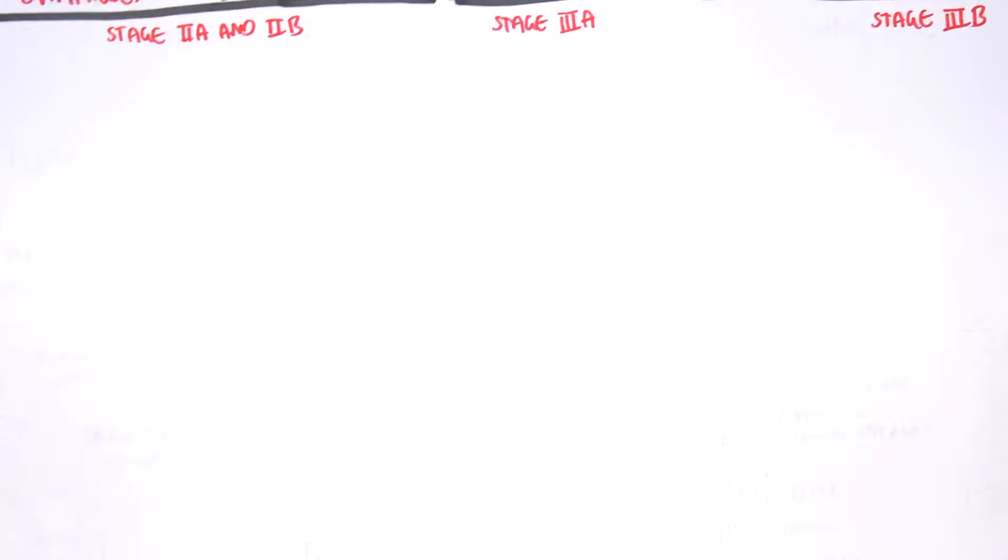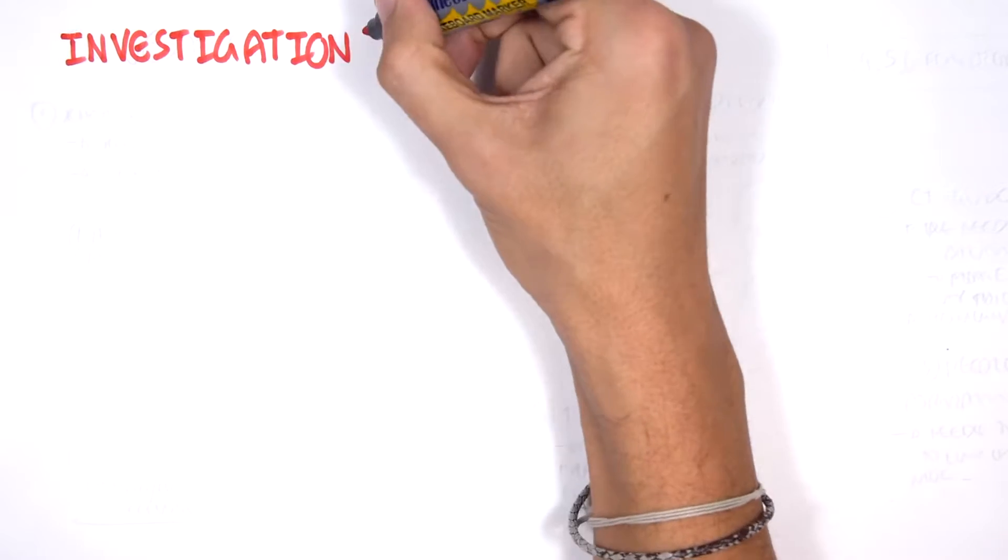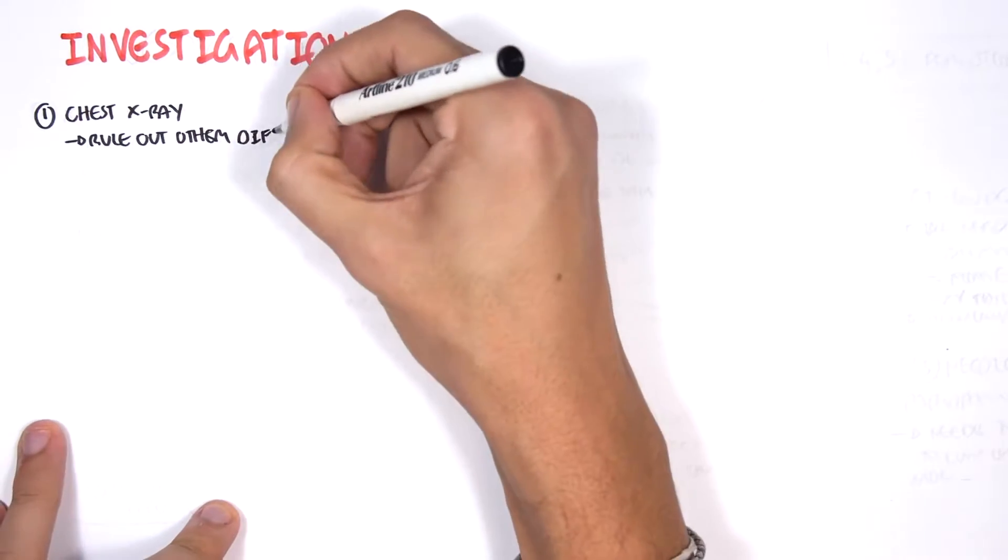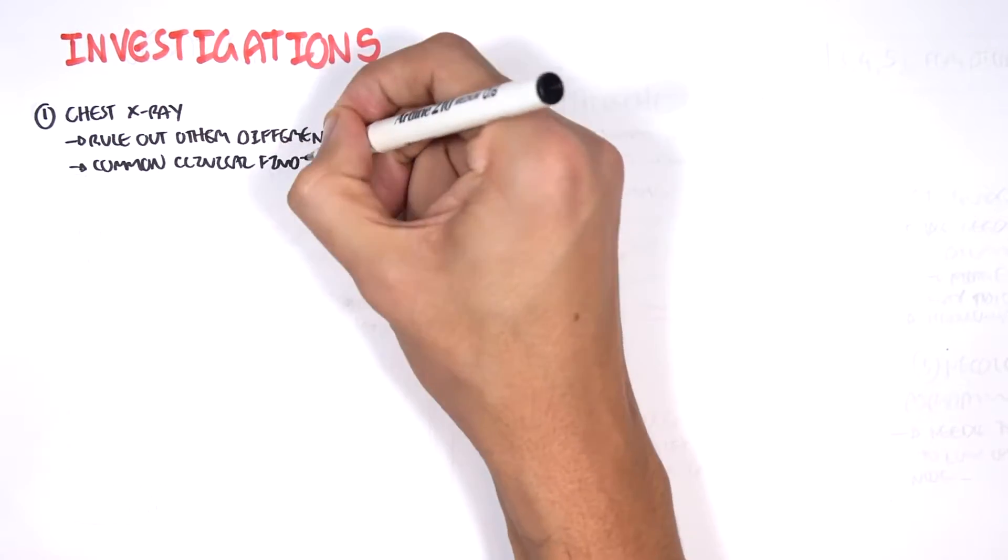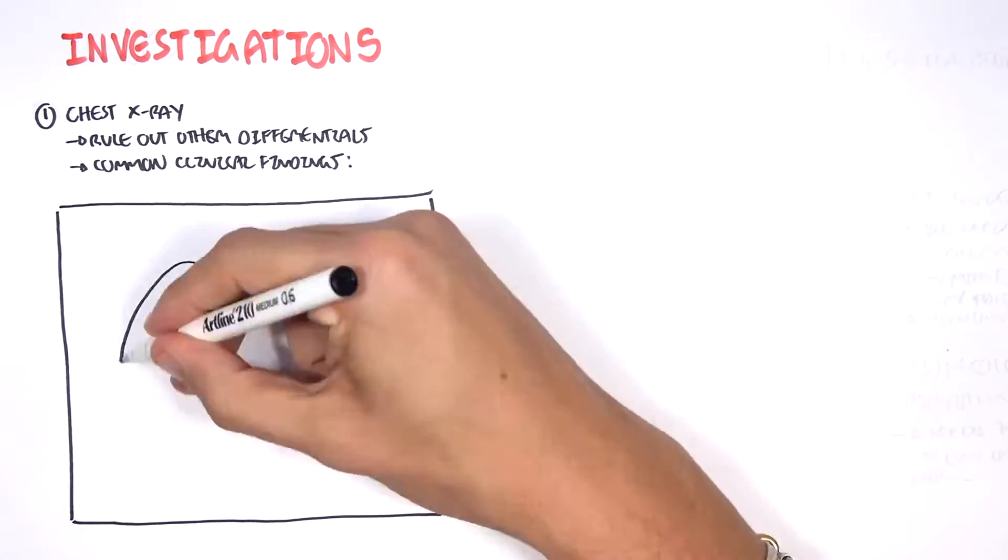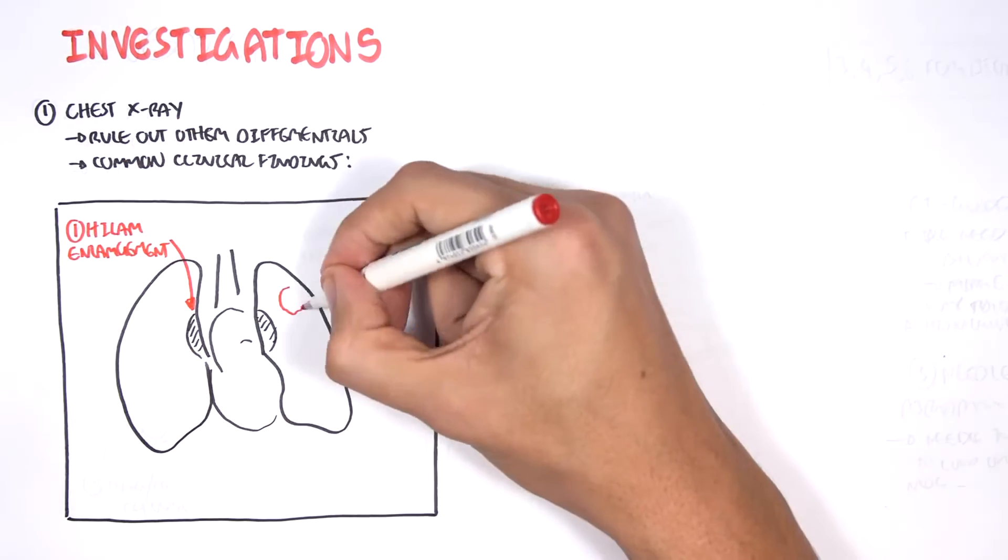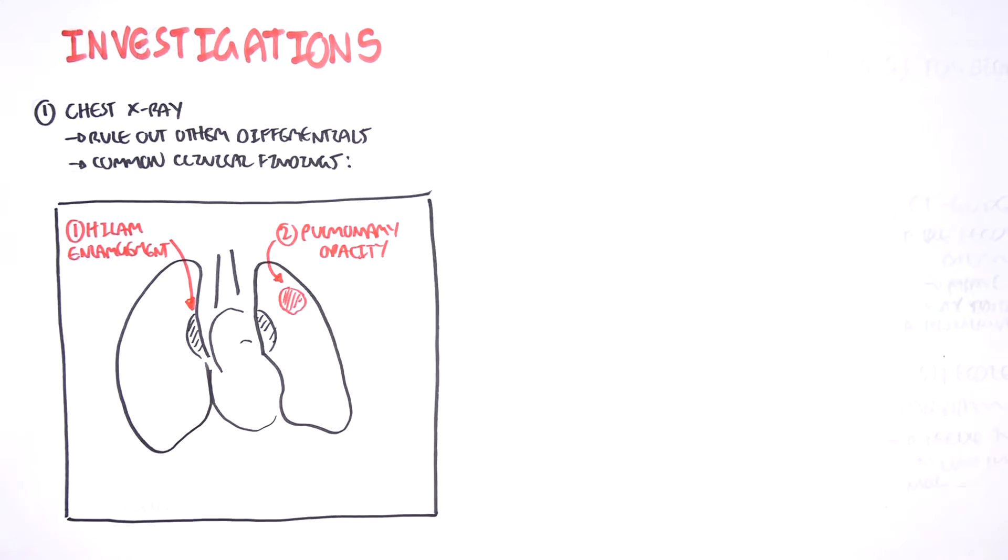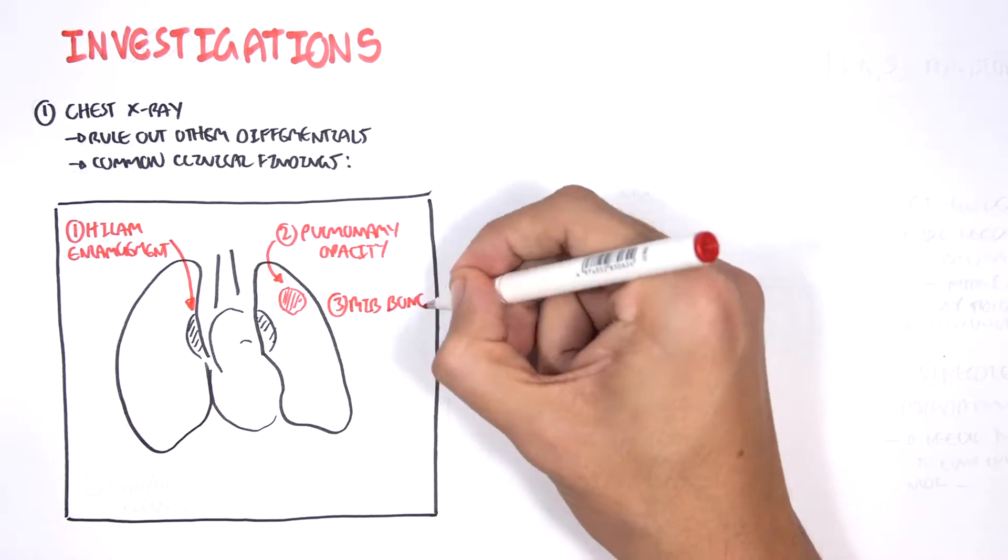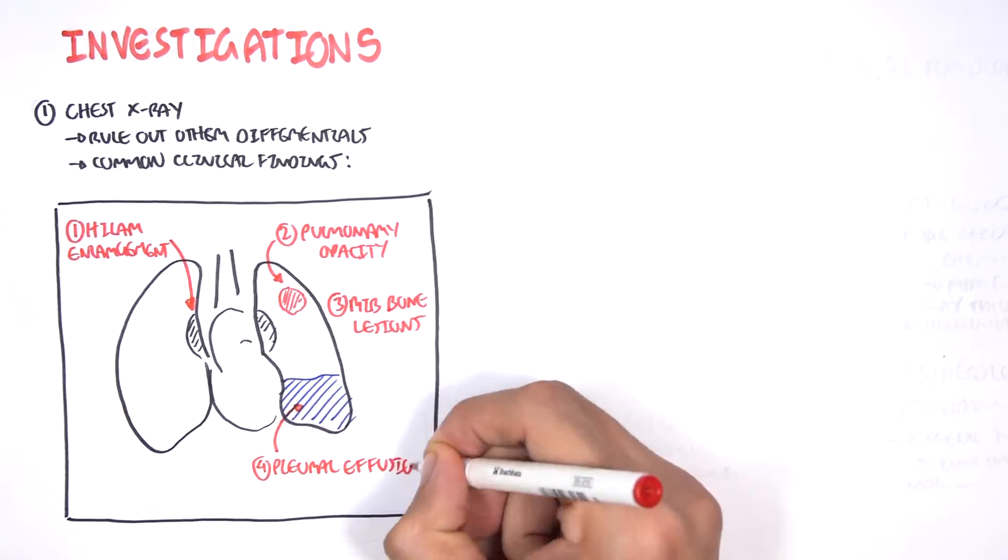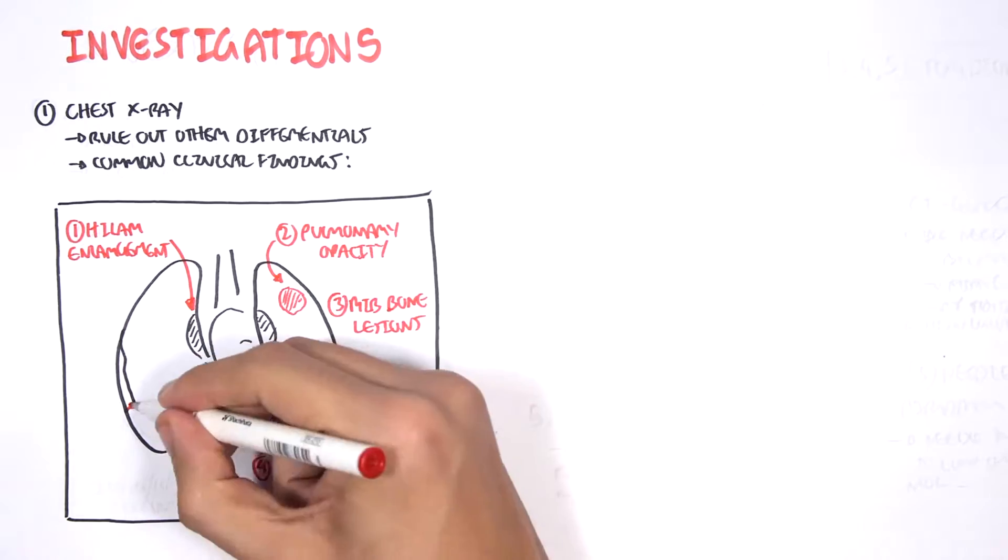Next, let us look at some investigations we would do if we were suspicious of lung cancer. Lung involvement, we always do a chest x-ray to rule out other differentials. Common clinical findings on x-ray for lung cancer include a hilum enlargement, pulmonary opacity which represents the tumor, rib bone lesions, pleural effusion, and also lung collapse.